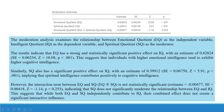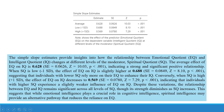However, the interaction term between EQ and SQ is not statistically significant — the P-value is greater than 0.05 — indicating that SQ does not significantly moderate the relationship between EQ and IQ. This suggests that while both EQ and SQ independently contribute to IQ, their combined effect does not create a significant interactive influence.